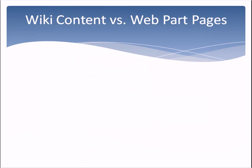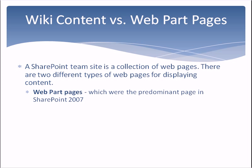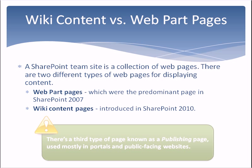A SharePoint team site in reality is a collection of web pages. There are two different types of web pages for displaying content: webpart pages, which were the predominant page in 2007, and wiki content pages introduced in SharePoint 2010. Technically there's a third type of page known as a publishing page, used mostly in portals and public-facing websites, which we'll look at in detail in a separate clip.